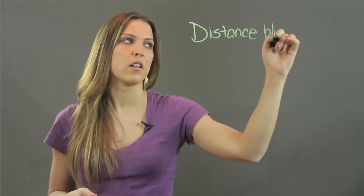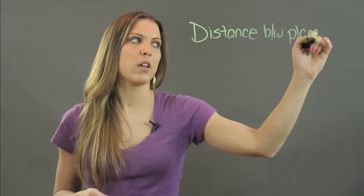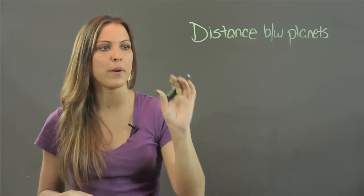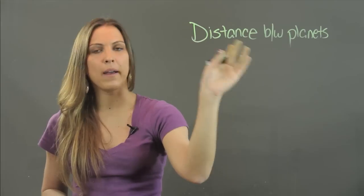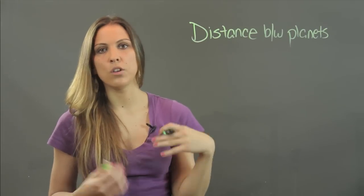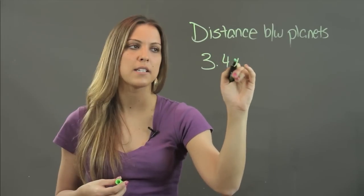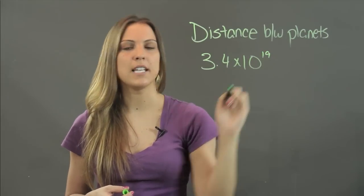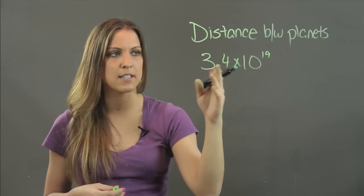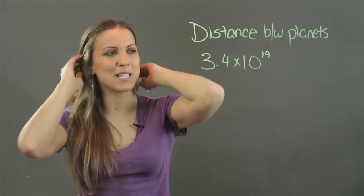that's one thing you do want to use scientific notation for, because you don't want to have a number written out that might have 20 spaces when you can just write something like, for example, 3.4 times 10 to the 19th power. This is not an exact distance between planets, but as an example it might be.